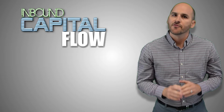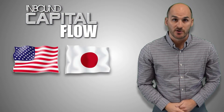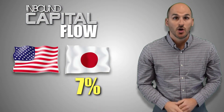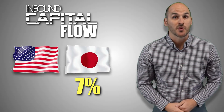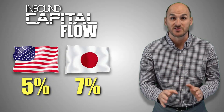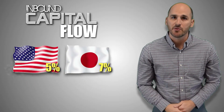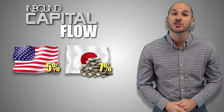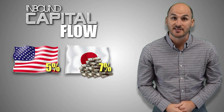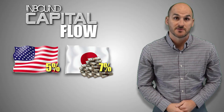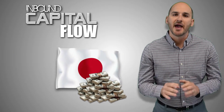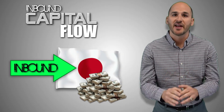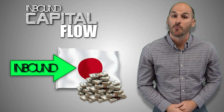For example, if the United States and Japan are trade partners, and Japan's real interest rate is 7% while the real interest rate in the United States is only 5%, American investors will liquefy their American assets and deposit their money into Japanese assets in order to earn greater profits. As a result, Japan will experience inbound capital flow because their financial assets are more profitable.